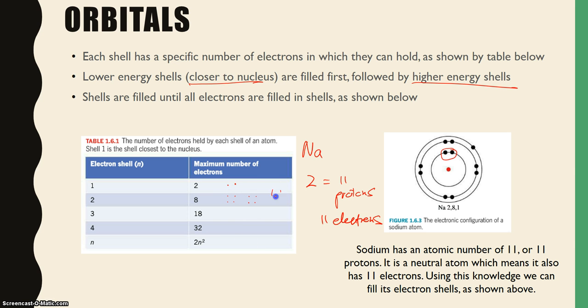Then the second shell holds eight. So if we have two electrons in the first and eight in the second, we now have a total of 10 electrons. Obviously sodium has 11 electrons, so there must be one more and the final electron will be in the outer shell. The electron configuration will be 2, 8, 1.